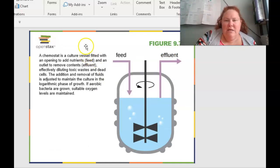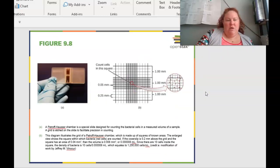A chemostat, this is a culture vessel that is fitted with an opening to add nutrients here, which would be basically feeding the cells, and then an outlet to remove the toxic waste and dead cells over on the right-hand side. And so basically, since we're feeding and removing, it's going to be able to keep cells growing at a constant state. The addition and the removal of fluids is adjusted to maintain the culture in that logarithmic super high growth span.